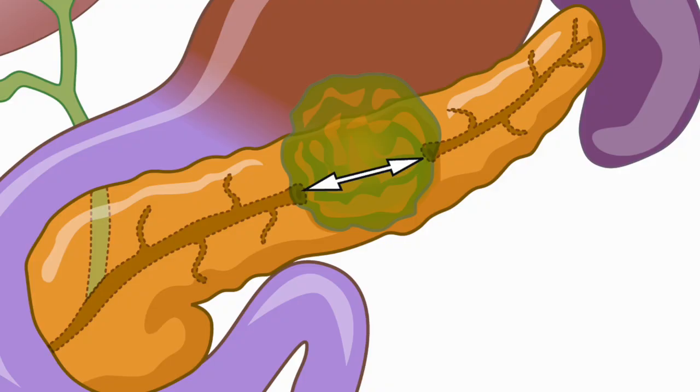DPDS is characterized by complete disruption of the main pancreatic duct, resulting in a variable portion of the upstream pancreas becoming isolated from the main pancreatic duct downstream.